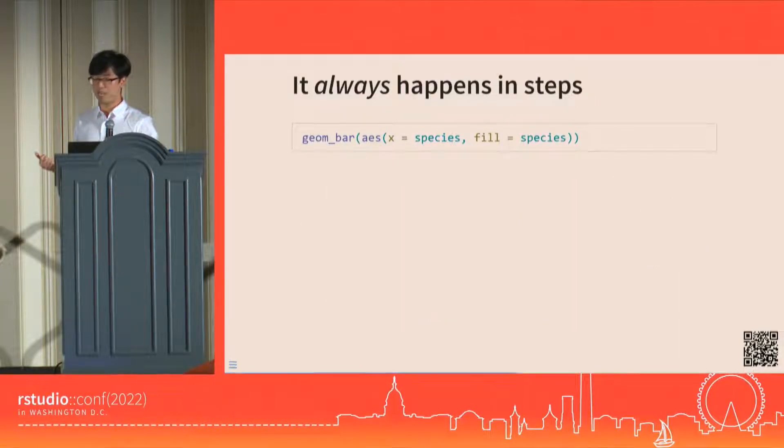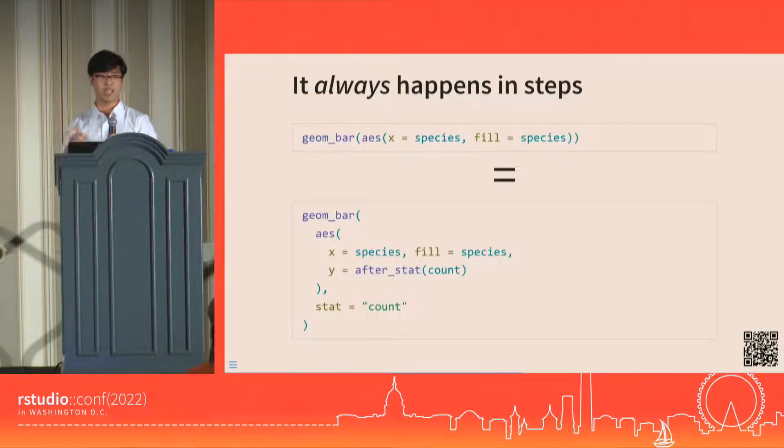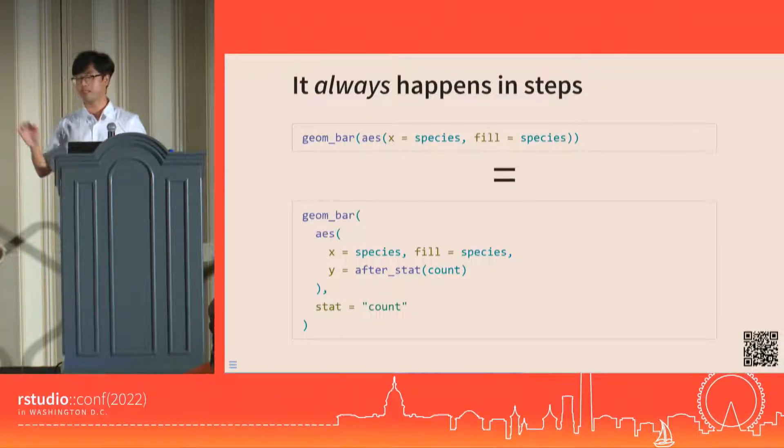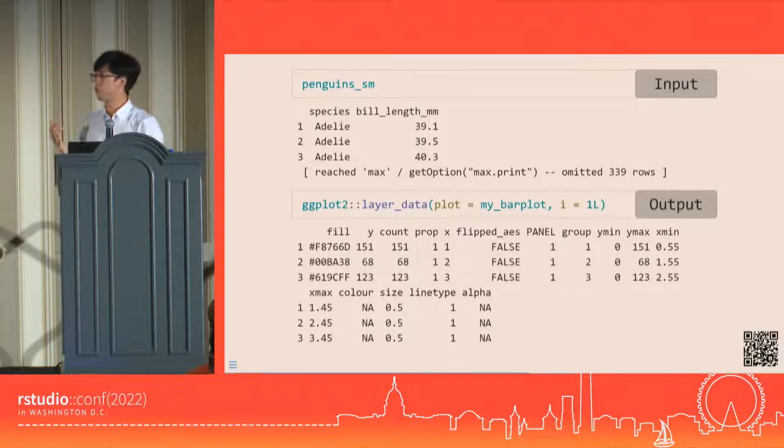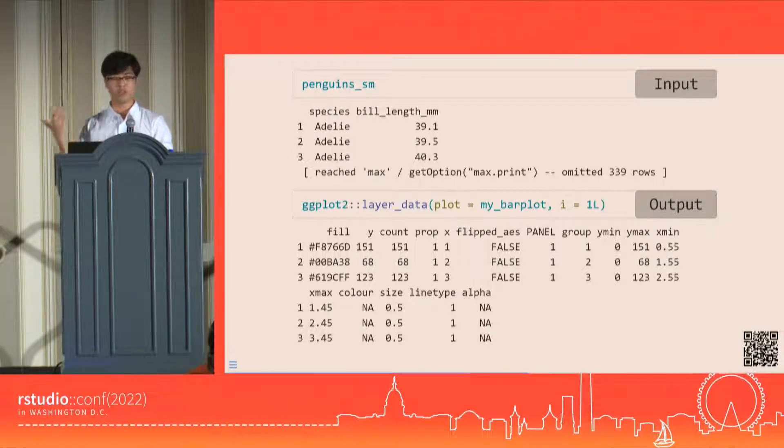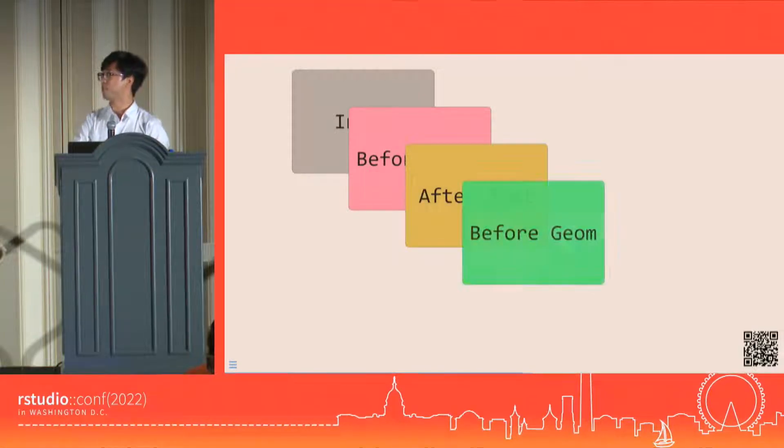We don't really think about how layers are built in steps when we write code like this. But once we spell out the defaults, like stat equals count and y equals after_stat(count), we see clear parallels to our more complex boxplot annotation layer, which is why I like this example. In the internals, the bar layer's data starts off as the penguins data and ends up in its drawing-ready form. To see how this all happens, we use ggtrace to intercept the data at the four steps that we care about.